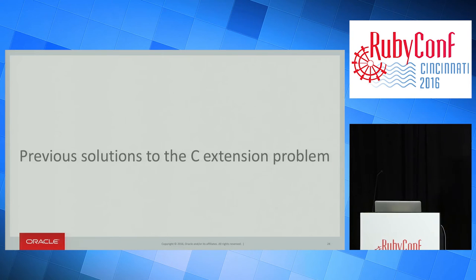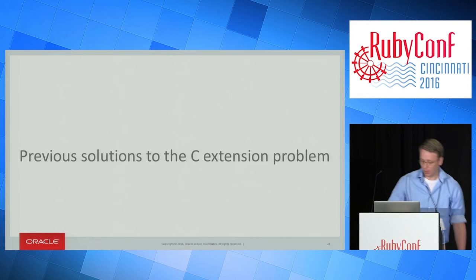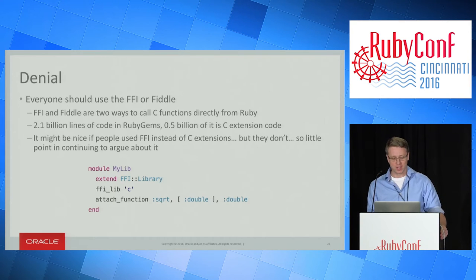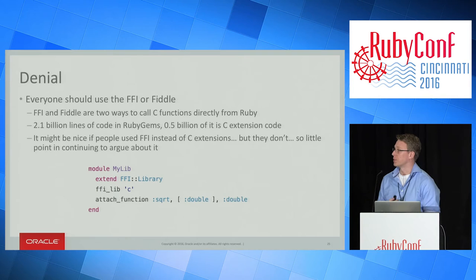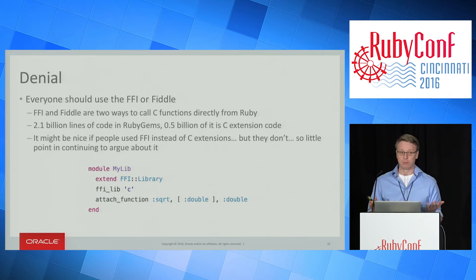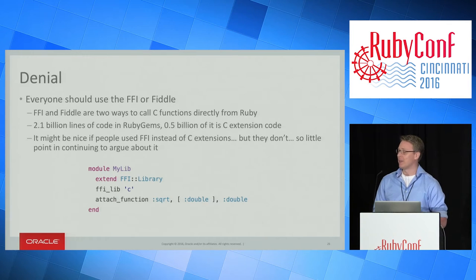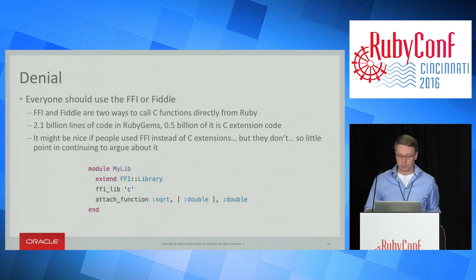Previous solutions to the C extension problem. The first proposed solution is denial. FFI and Fiddle are two libraries which allow you to call C functions directly from Ruby instead of writing C code. These are effective ways to write C extensions, but the problem is there are 2.1 billion lines of code inside the Ruby gem repositories and half a billion of it is C extensions. It would be nice if people used FFI to write C extensions, but they don't. There's no point arguing about it — we want to run people's code today. Even the C extensions inside MRI don't use FFI.